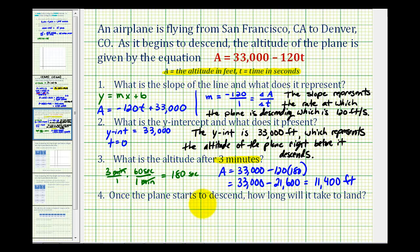And then for number four, once the plane starts to descend, how long will it take to land? Well, going back to our equation, A represents the altitude of the plane, so right when the plane lands, the altitude would be zero. So if we set A equal to zero and solve for T, we can answer number four.